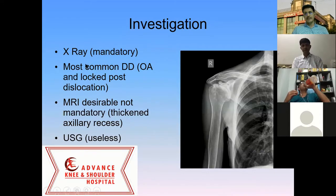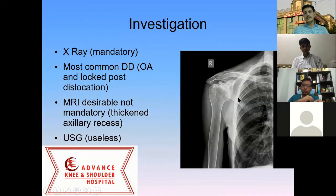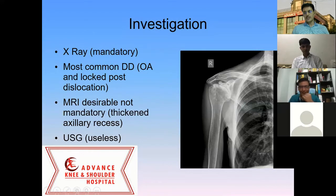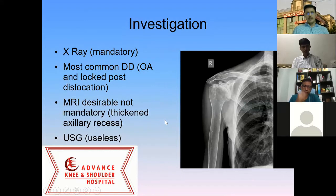An X-ray is always mandatory because many times a patient diagnosed with frozen shoulder or adhesive capsulitis is being treated for that, but actually it may be osteoarthritis or a locked posterior dislocation, which can be easily picked up on X-ray. So always do an X-ray for a patient presenting with a stiff shoulder. An MRI is desirable but not mandatory to treat. Ultrasound does not have an important role in this particular indication.